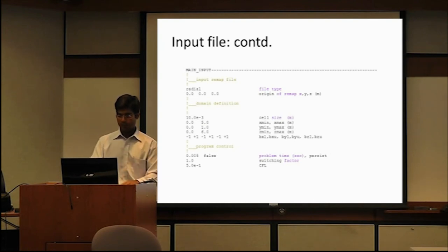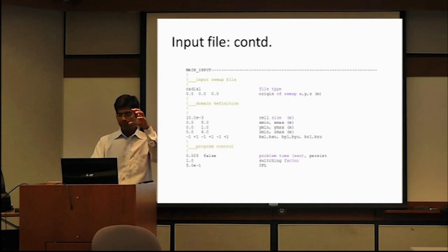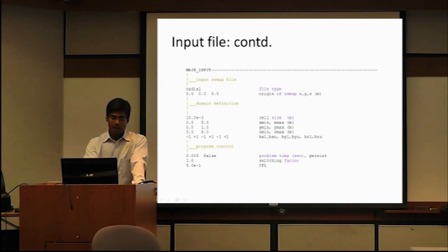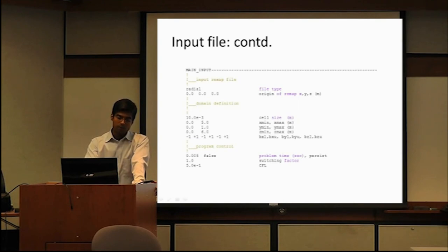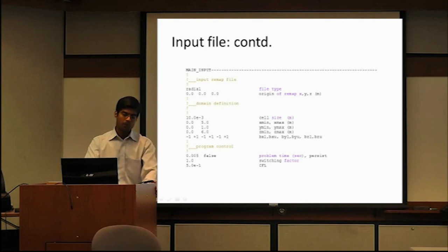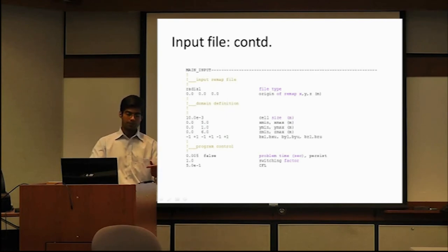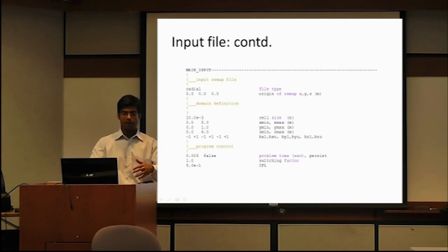For 3D boundary conditions: reflective boundary at one end, transmissive at the other. All boundaries at the origin are provided as reflective because they are a center of symmetry. The other boundaries are transmissive — letting the wave pass through.